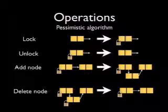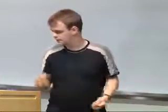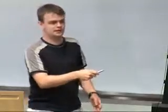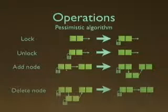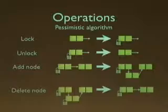With the pessimistic hand-over-hand locking, there are four operations. We can lock a node — if it's unlocked, we make it locked. If we've locked a node, we can unlock it. If we've locked a node and know where it's pointing, we can swing its pointer around and insert a new node. And if we want to delete a node, if we lock its predecessor and it, then we can remove it. This is just a little pictorial representation of the algorithm — what's going on, how we can see what people can do.